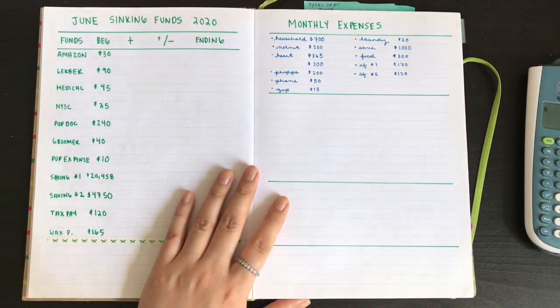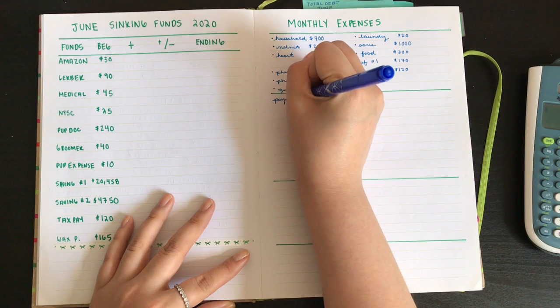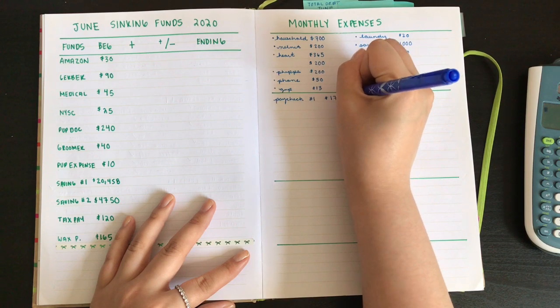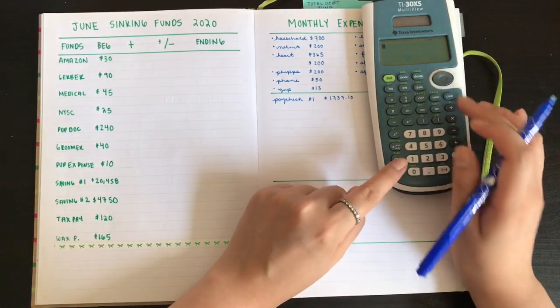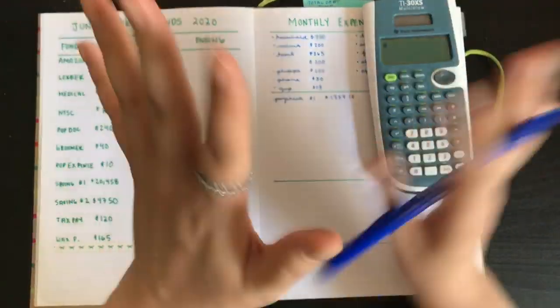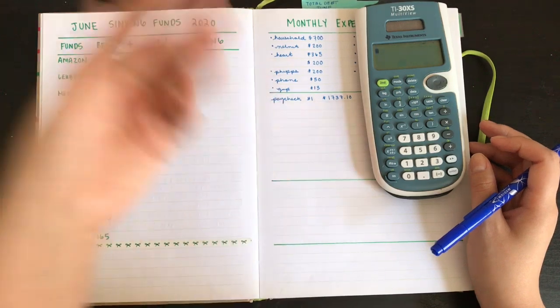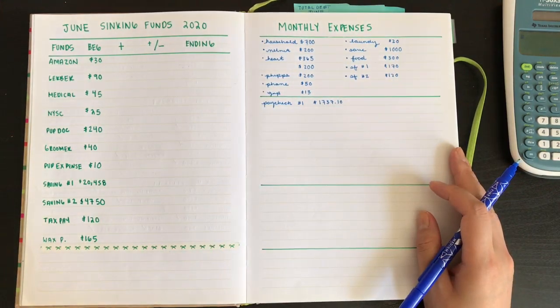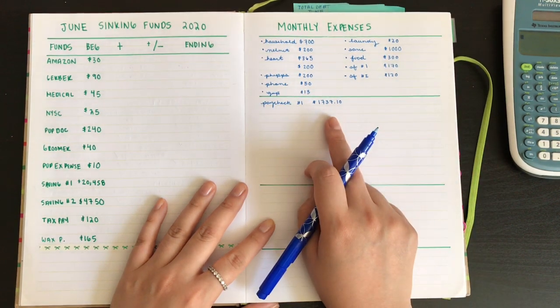For the 15th, I will be getting paycheck number one, and that is $1,737.10. This is a little bit higher than usual, just because I canceled my MetroCard, or I suspended, not canceled, because when, if everything goes back to normal, I'm going to re-open it. I suspended my MetroCard. Now, I have an extra $126 to my paycheck. That's why I'm able to save a little bit more money than usual. And also, I'm not paying my gym membership right now, so that's also going to savings.